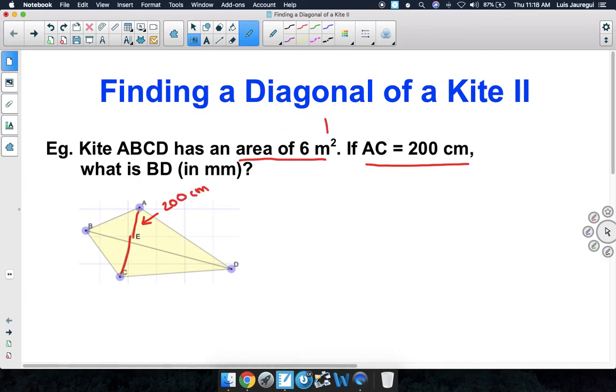Since the area is given to us in square meters, I recommend that we change from centimeters to meters for now. Let's set up a proportion relating centimeters to meters. 100 centimeters correspond to 1 meter, and here we're given 200 centimeters, and we're finding the corresponding value in meters. Let's call that corresponding value Y for now.